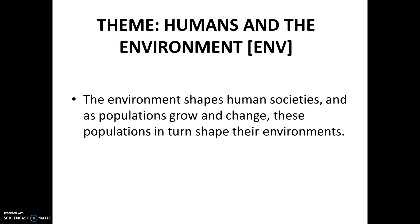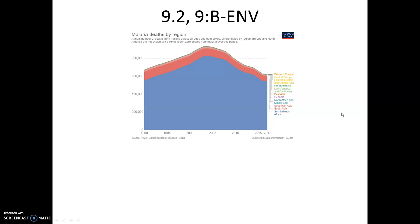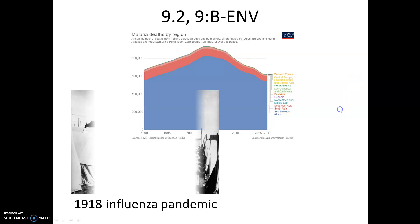Next we move on to humans and the environment. Topic 9.2 covers advances and limitations in technology with disease. Malaria is a disease associated with poverty, and the map shows why — the vast majority of deaths are in sub-Saharan Africa, while most of the rest are in South and Southeast Asia. Europe and North America are not shown since there are zero deaths, as they are more affluent countries.